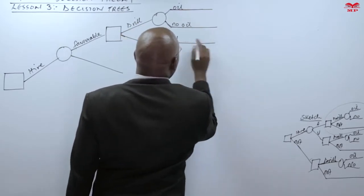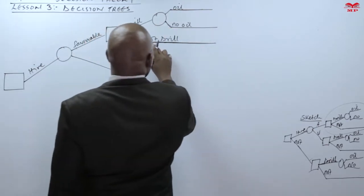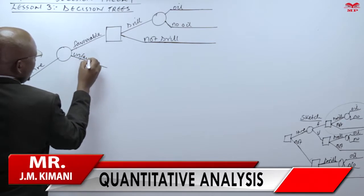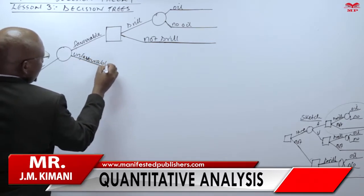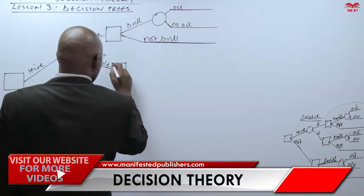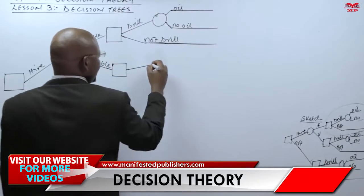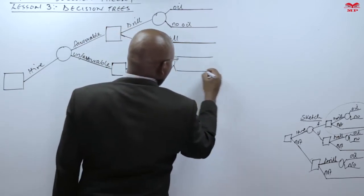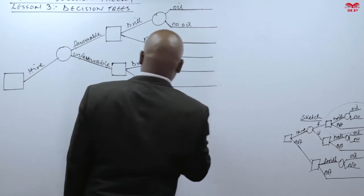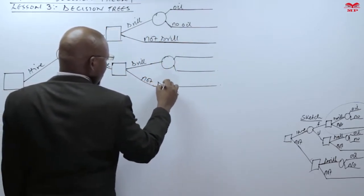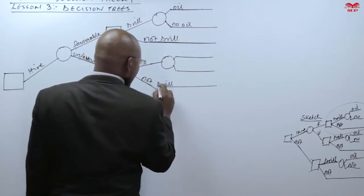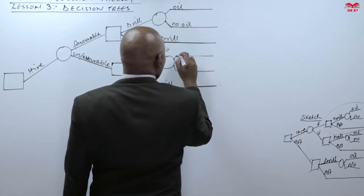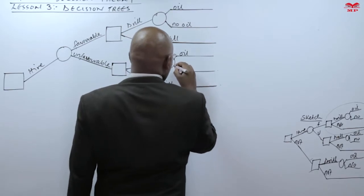That is going to be our diagram. Then from there we have the unfavorable branch. This is unfavorable. This one will also have a decision to make — you are going to drill for oil with the outcome being oil or no oil, or you may not drill.